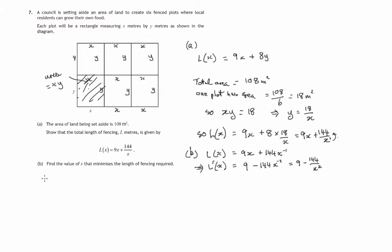And remember for stationary points on a graph, if we were to draw a graph of the value of x against the total length of the fencing, somewhere we're going to get a minimum value and the gradient to 0.